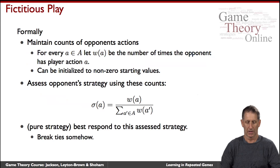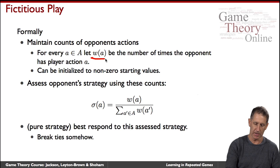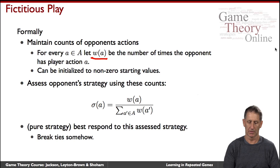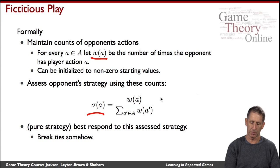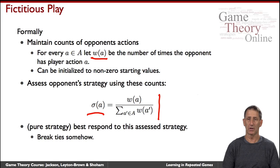More formally, let w_a be the number of times the opponent played action a in the past, with some initial non-zero values. You then play action a with probability proportional to how often it was played in the past. It's a very straightforward simple procedure. There's something a little paradoxical going on: each agent is always playing a pure strategy, and yet they're modeling each other as always playing a mixed strategy.